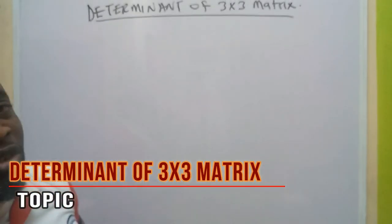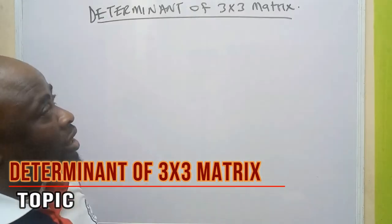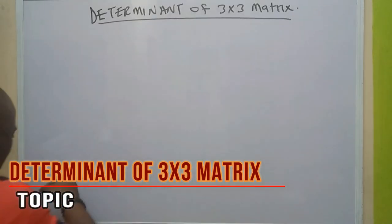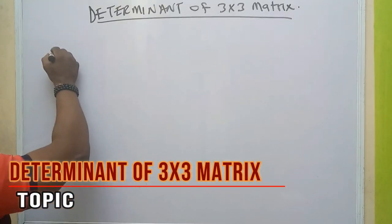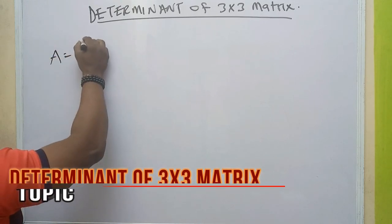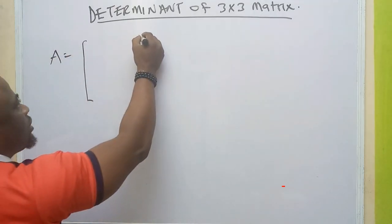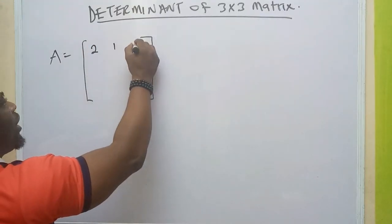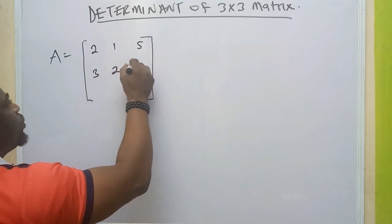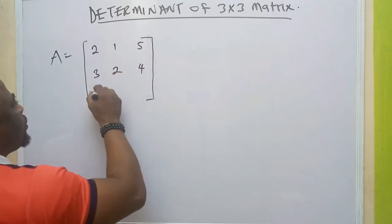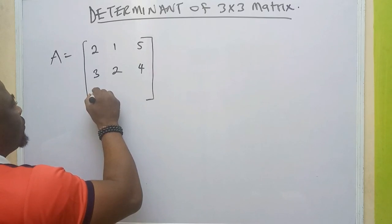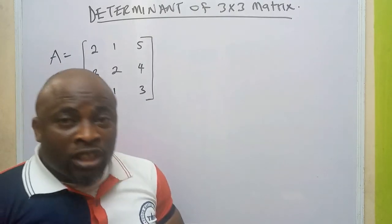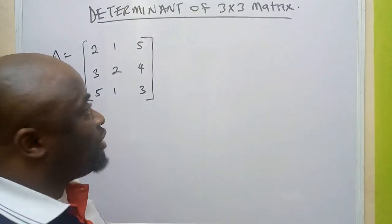Now, let's look at this. Let's say we have matrix A. Let's assume we have 2, 1, 5 in the first row; 3, 2, 4 in the second row; and 5, 1, 3 in the third row. This is a typical example of a 3x3 matrix.